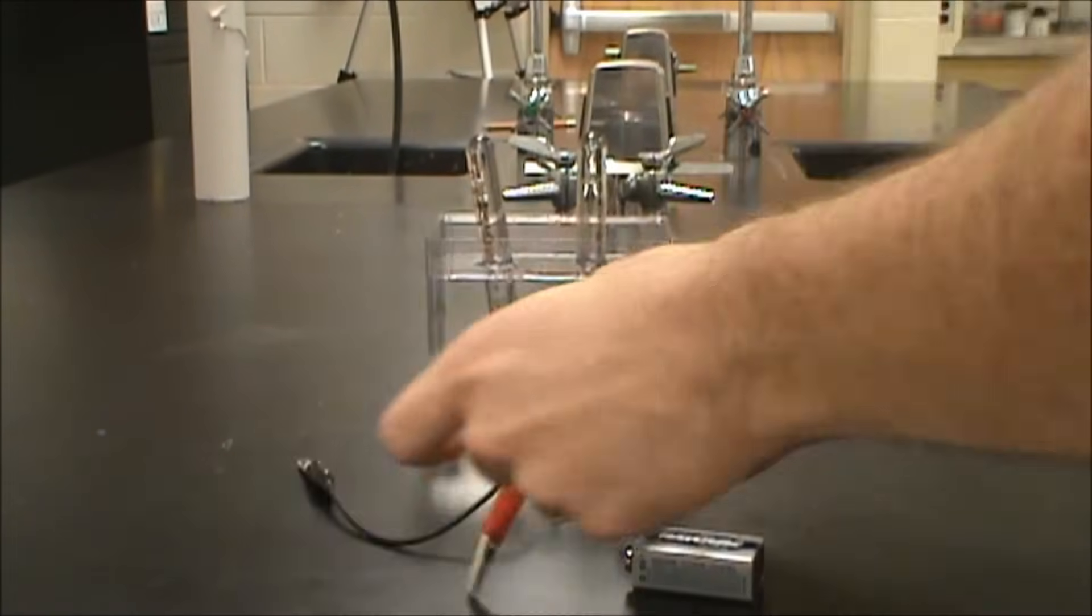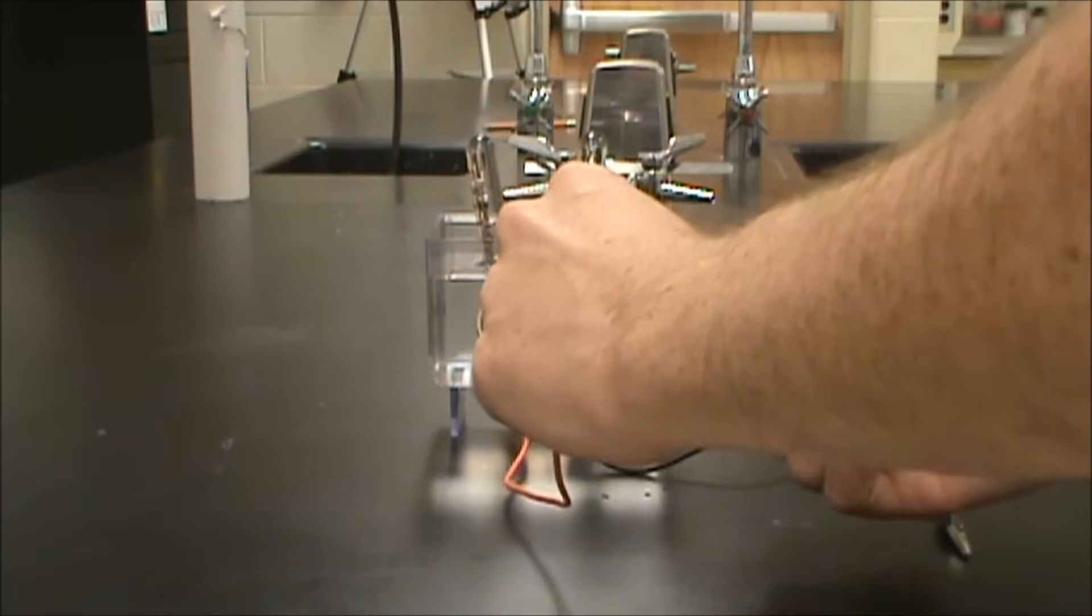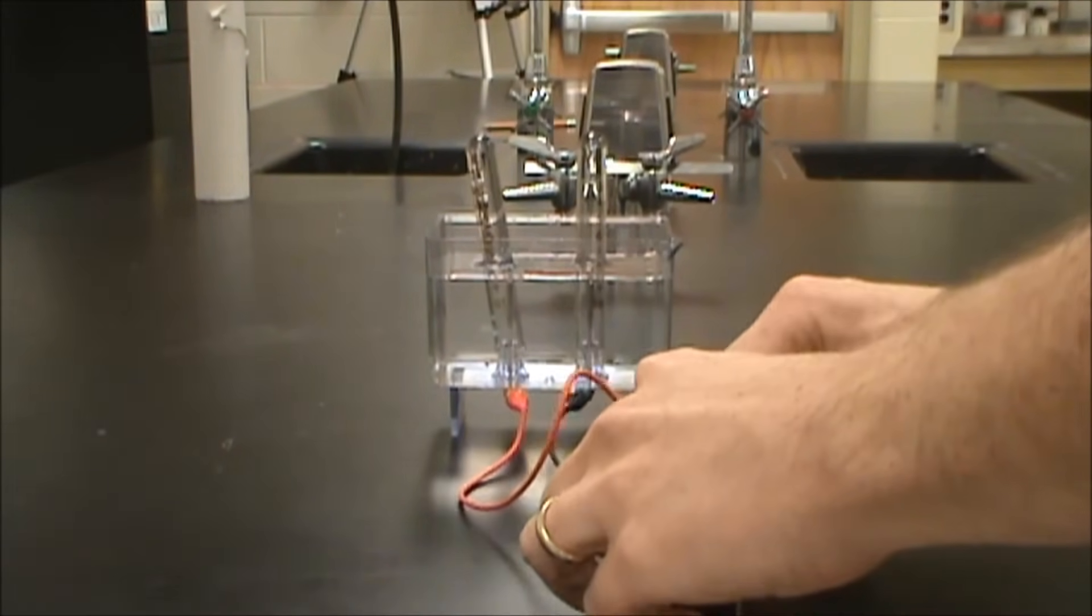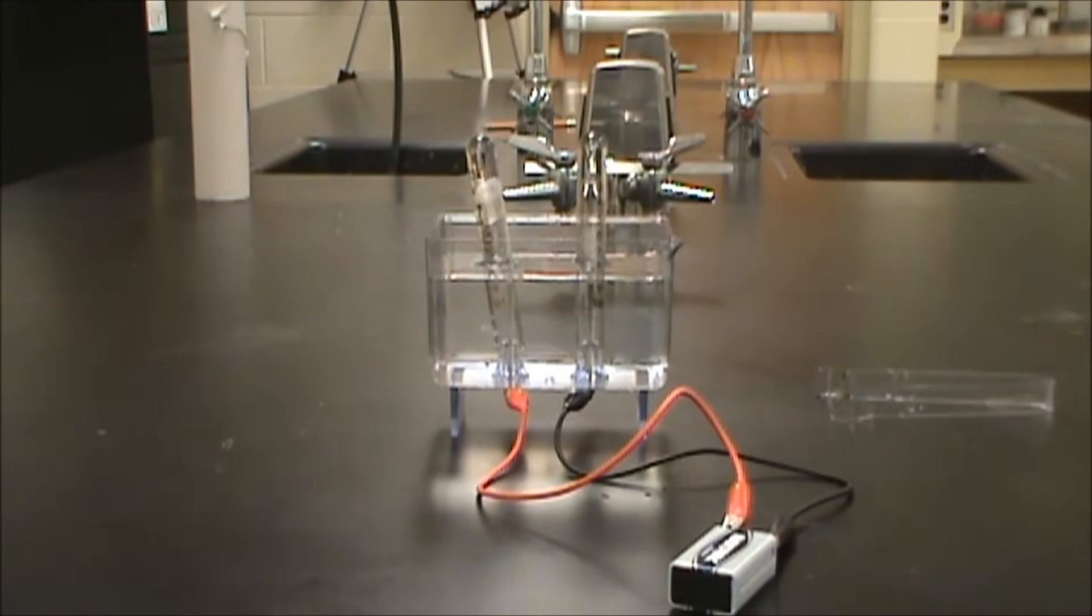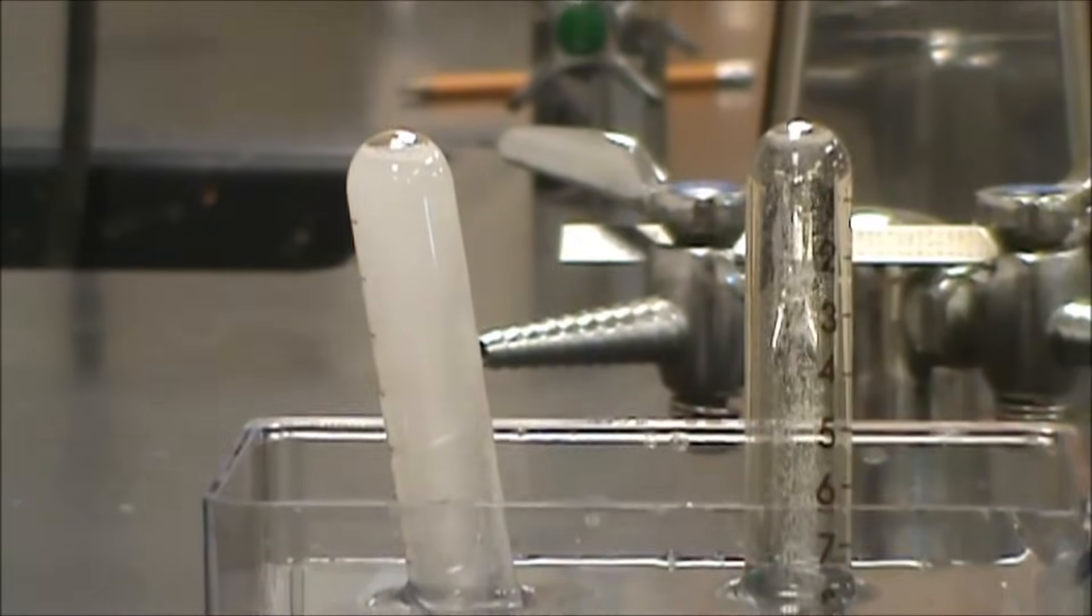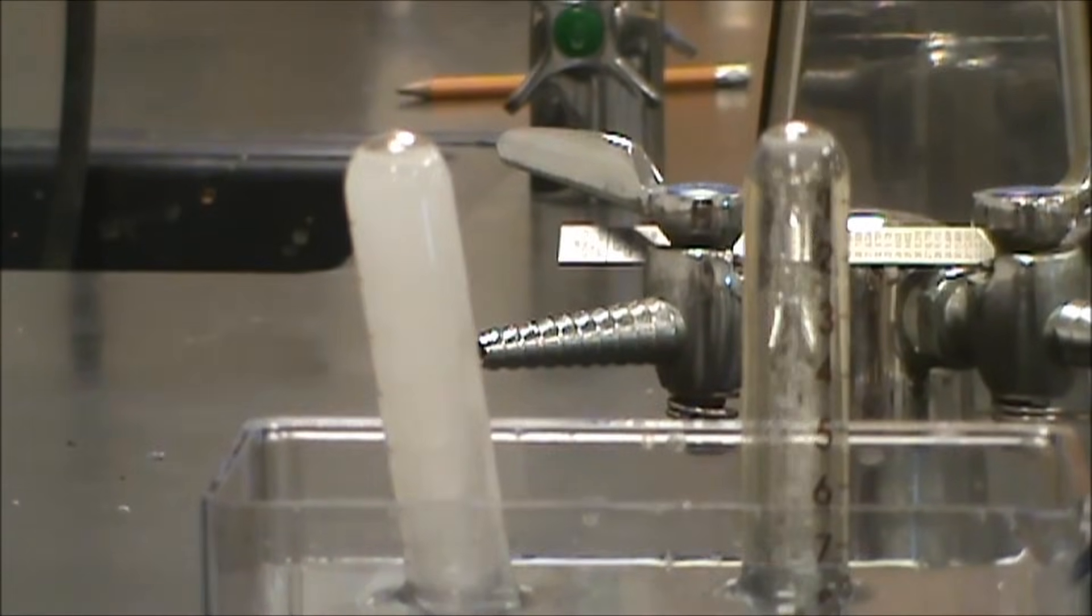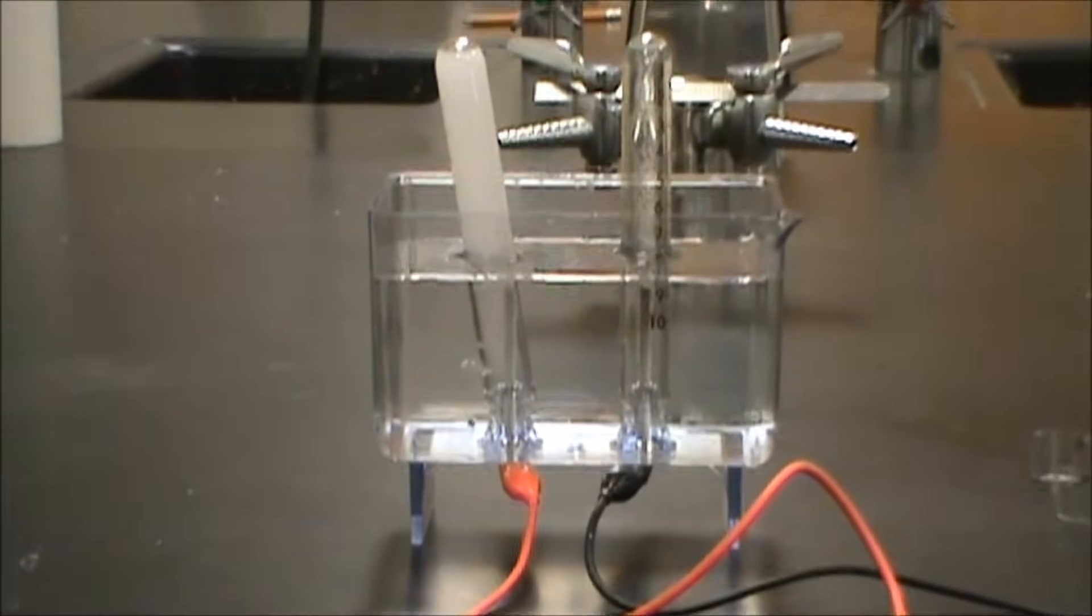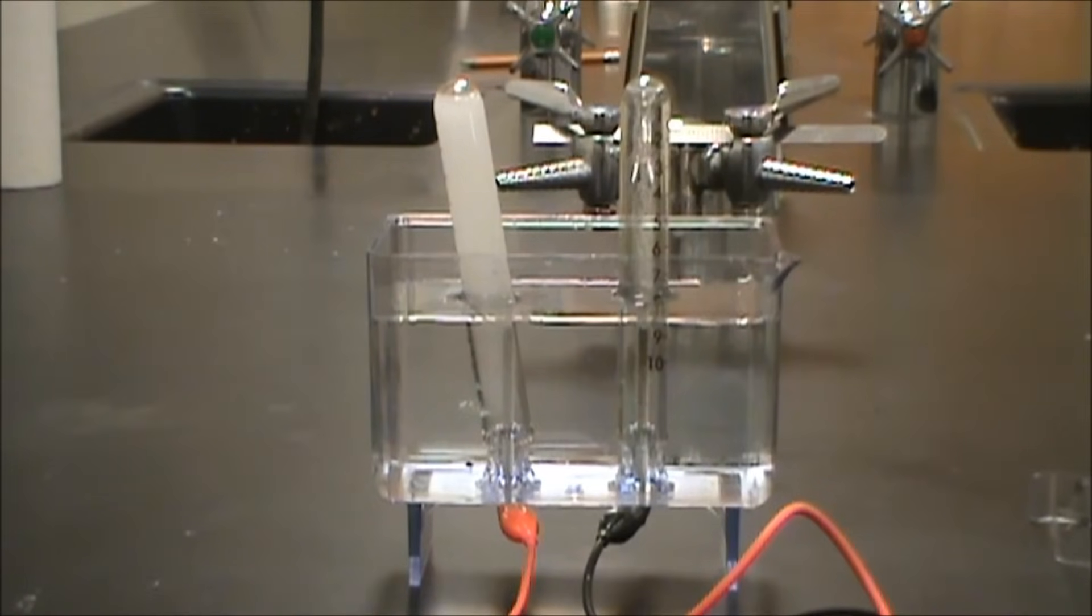We're going to run a red lead to the negative terminal of the battery and a black lead to the positive terminal. When we do that, you can see bubbles starting to originate in there. I'm going to zoom in so we can see that up close. The gas is collecting on the left and on the right, so we're going to let that run until we've collected enough to make a measurement.